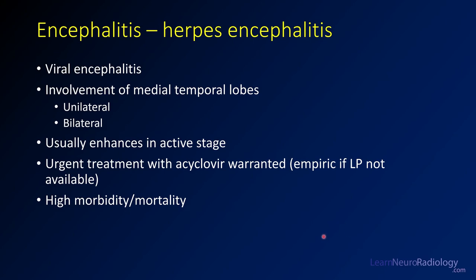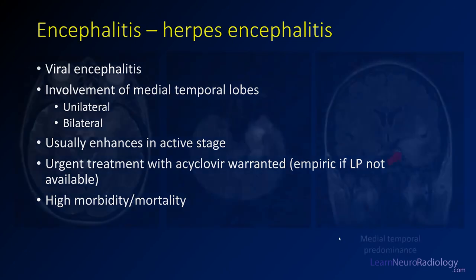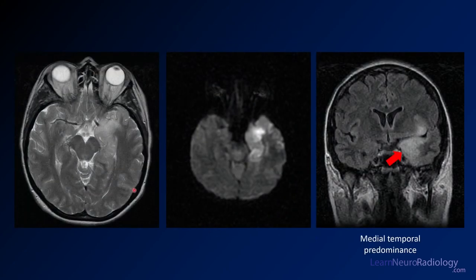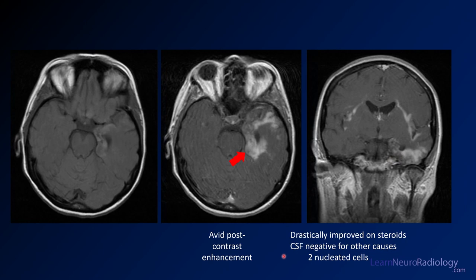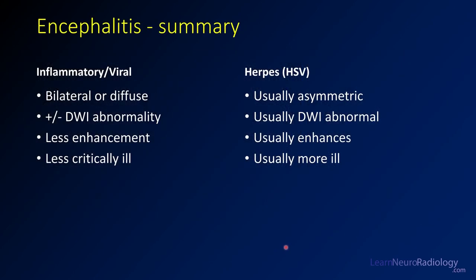Herpes encephalitis typically causes medial temporal lobe involvement, as in this case. In the active or most aggressive stage, you tend to get enhancement. These patients require urgent treatment with acyclovir — even if you're unable to do an LP yet, you want to start them empirically until it's ruled out, because morbidity and mortality are quite high. You see the abnormal T2 and FLAIR with a medial predominance, and the enhancement. This patient drastically improved on steroids, with no other cause detected in the CSF, confirming herpes encephalitis.